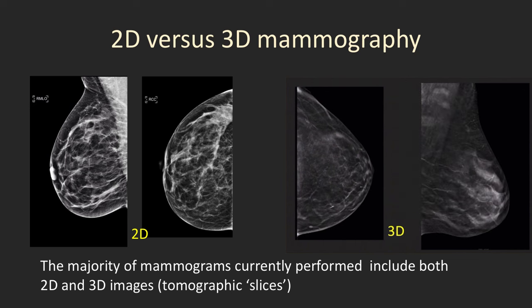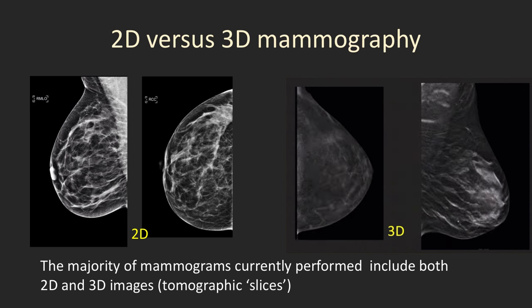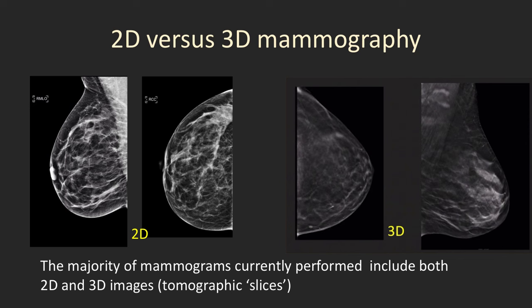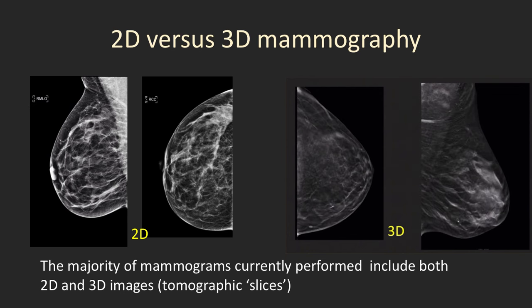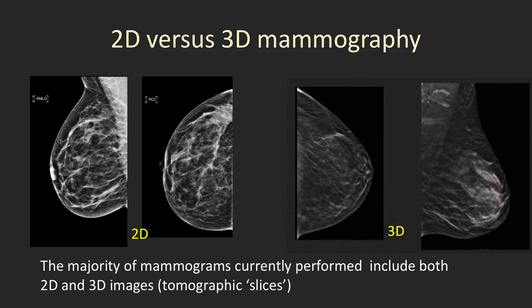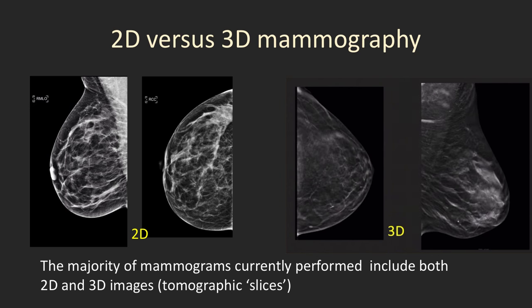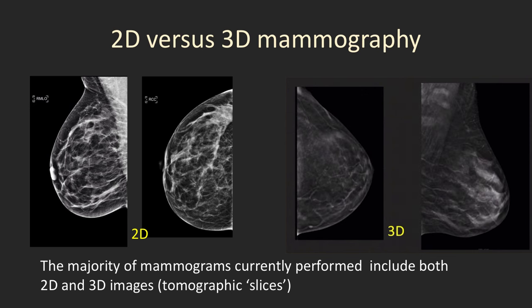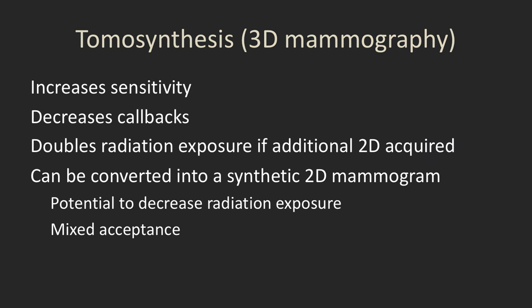What is the difference between 2D and 3D mammography? 2D mammographic images are like an AP and lateral chest X-ray — turning 3D data into a 2D image. 3D mammography or tomosynthesis is a technique that allows us to obtain a series of slices through the breast, similar to a CT, giving us a better look at the breast layer by layer. The majority of mammograms currently performed include both 2D and 3D images. Tomosynthesis increases sensitivity, decreases callbacks, but does double the radiation exposure if you acquire that additional set of 2D images.